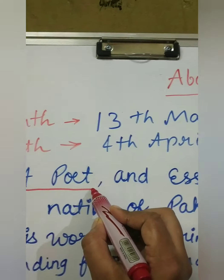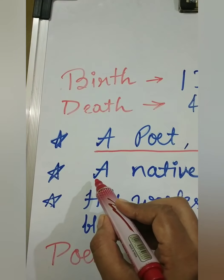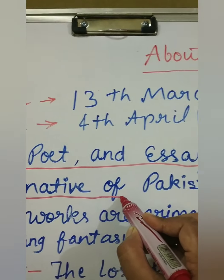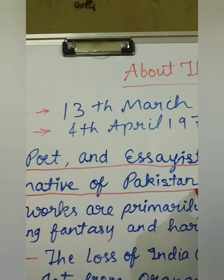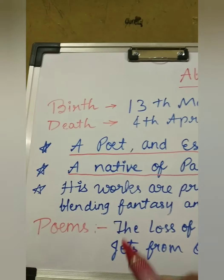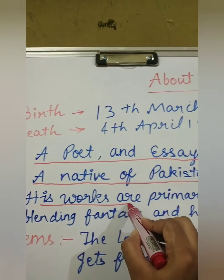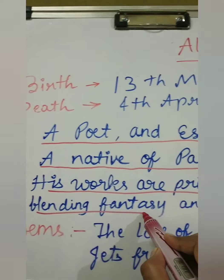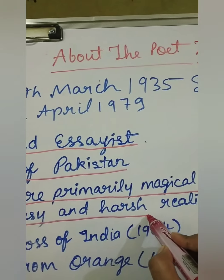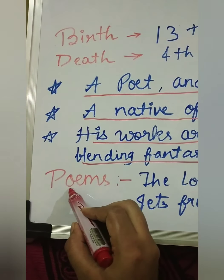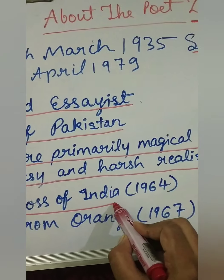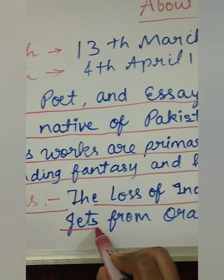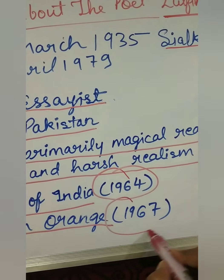He was a poet and essayist. As he was born in Pakistan, he was a native of Pakistan. His works are primarily magical realism, blinding fantasy, and harsh realism. His major poems were 'The Loss of India' in 1964 and 'Jets from Orange' in 1967.